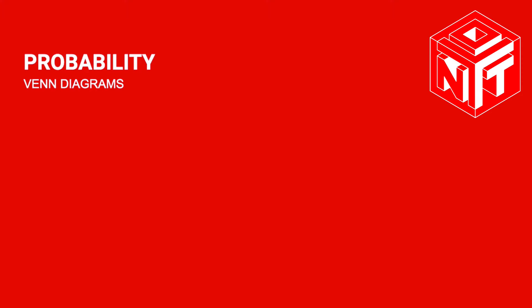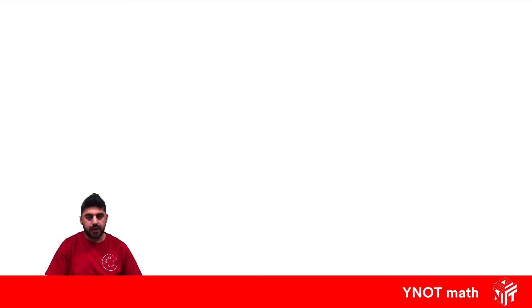Venn Diagrams. A Venn diagram is used usually when we're looking at two or three categories, and it involves drawing overlapping circles. Let's have a look.